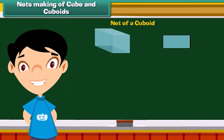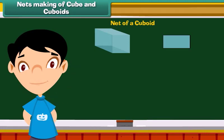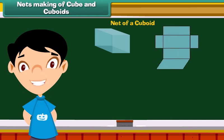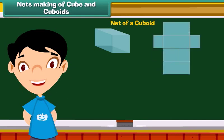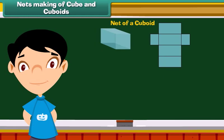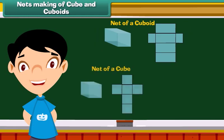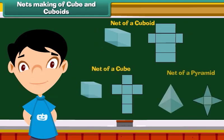A net of a 3D shape is an arrangement which, when folded along the common edges, forms the 3D object. Here are some nets for making cubes and cuboids.